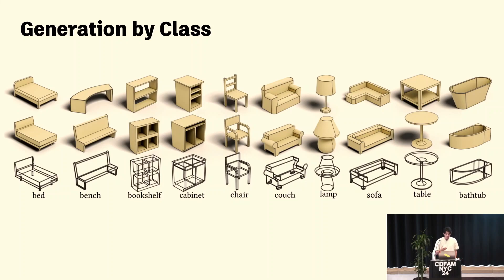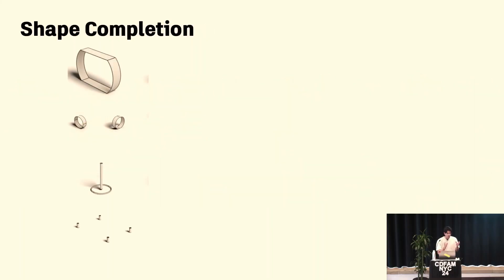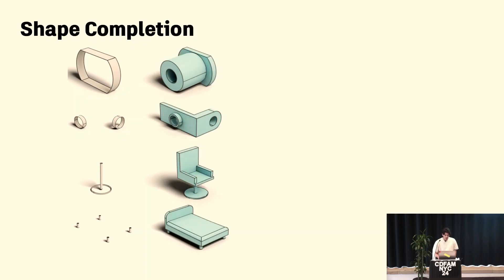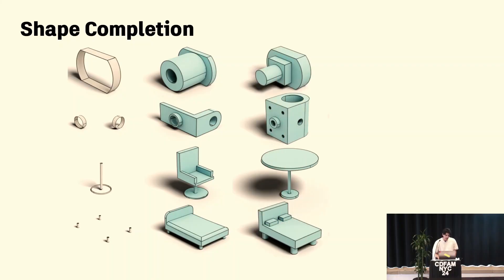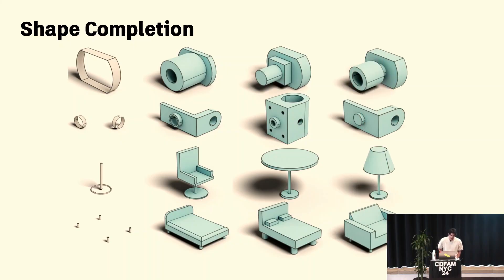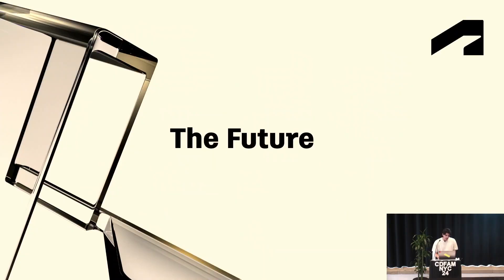If we have labels for different types of furniture, we can do class-conditional generation — say, give me a random lamp or a random bed. We can also do shape completion: if we have a partial set of surfaces, the model can generate multiple plausible completions that fit with those inputs. It's interesting — when you give it four legs, it can come up with either a bed or a couch. Think of this as an autocomplete workflow for design.